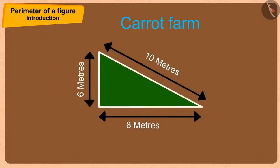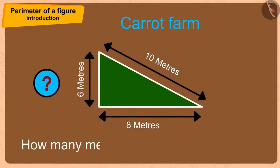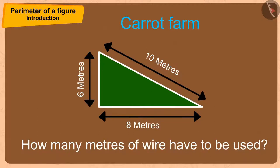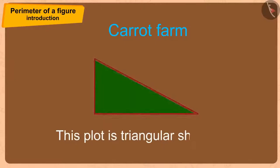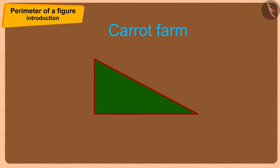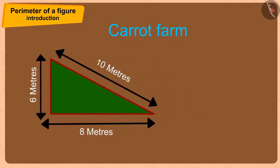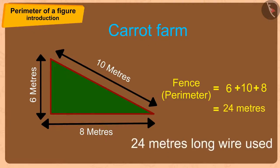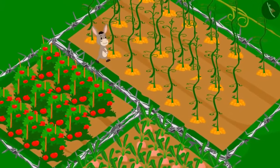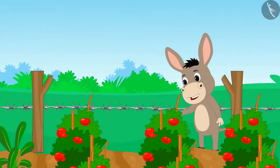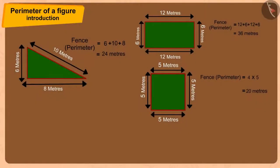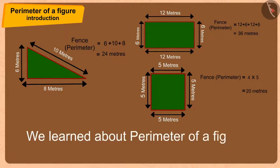If Bhoala sowed carrots in a triangular shaped plot, how many meters of wire would he need to fence it? To find the perimeter of a triangular shape, we only add the lengths of its edges. The sides are 6, 10 and 8 meters, so Bhoala needs a 24 meter long wire. Bhoala put up the barbed wire fence and those mice never bothered him again. Children, in this video we learned about the perimeter of a figure. In the next video we will learn more through interesting examples.